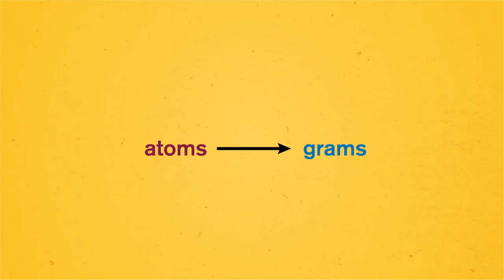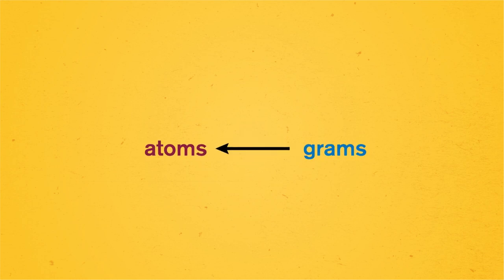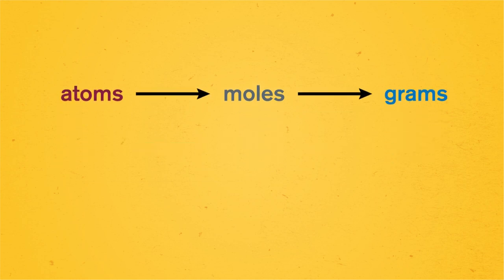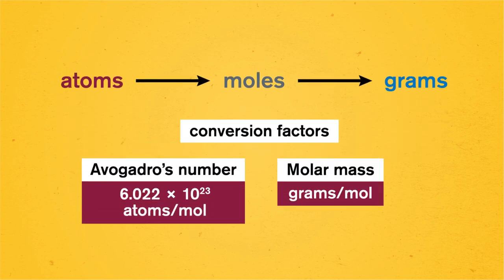One situation we might run into that requires multiple conversion factor stepping stones is converting atoms to grams, or vice versa. When we use a conversion factor, we're only moving from one unit to another, like from atoms to moles or moles to grams. Since we don't have a conversion factor that gets us directly from atoms to grams, we need to use two factors to get us there, with moles in the middle. It's like taking a flight with a layover because we can't get a direct flight.